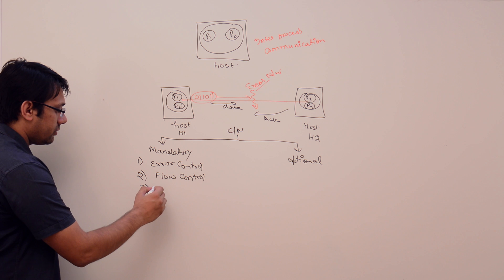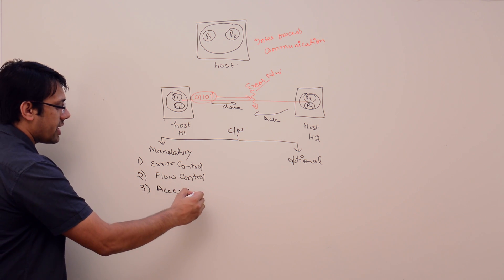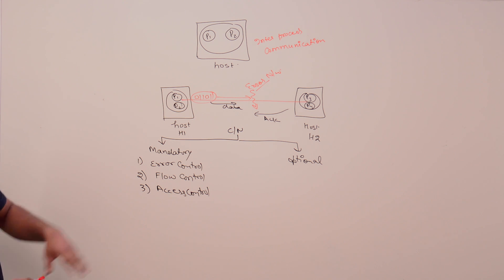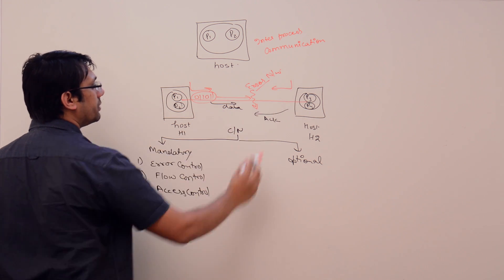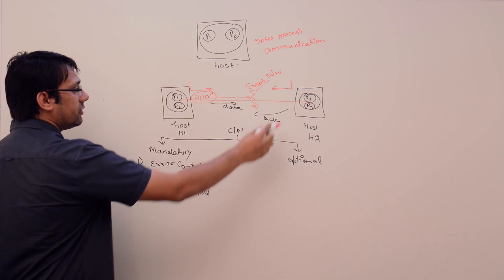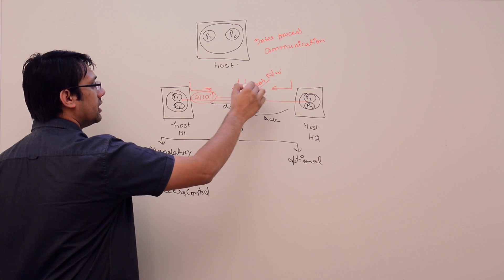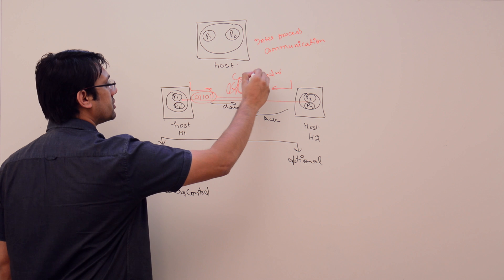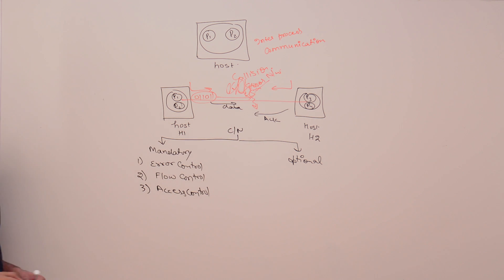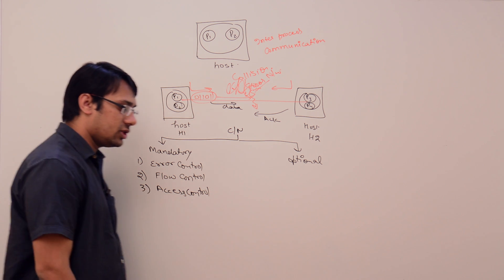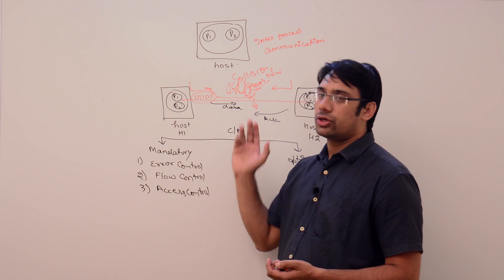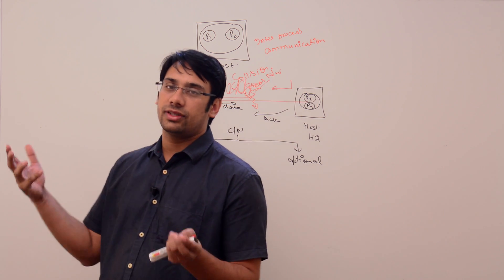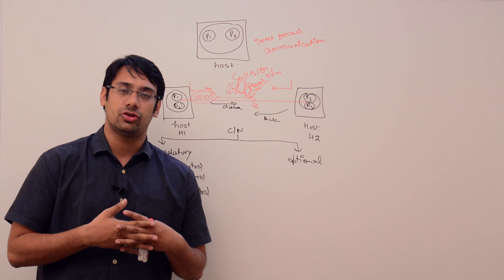The third mandatory functionality is access control. If P1 is sending data to P2 and P2 is also sending data to P1 at the same time, there will be collision in the network. Access control means we should define at what time a particular host can access the network, so that data does not collide with each other.